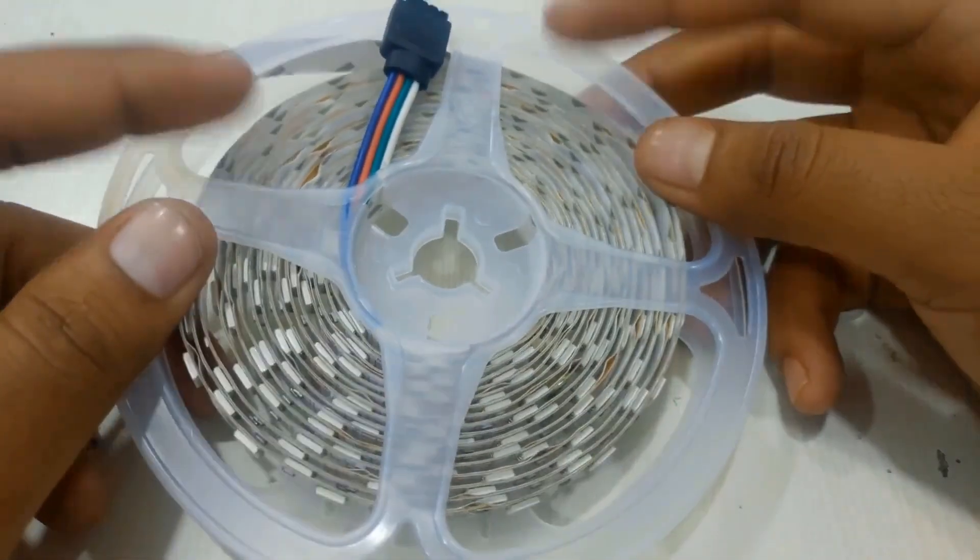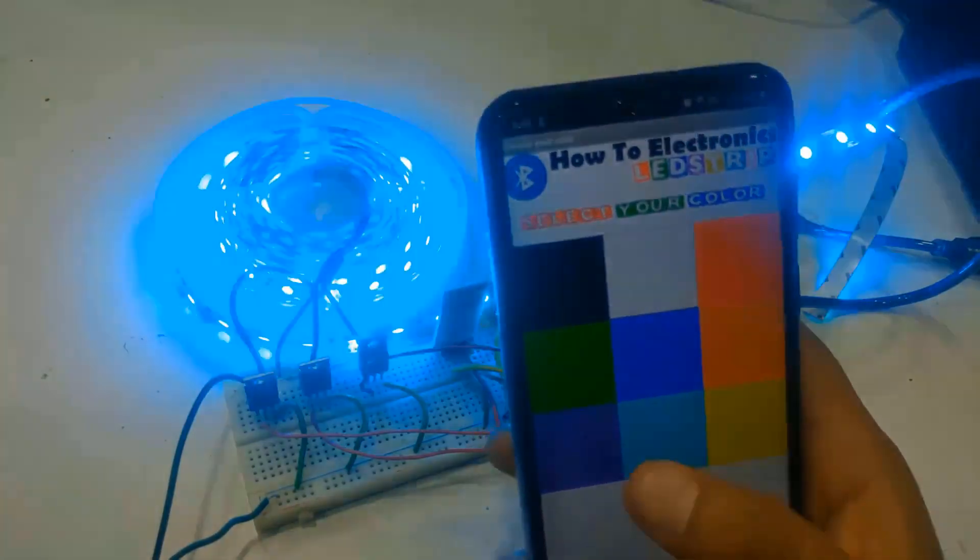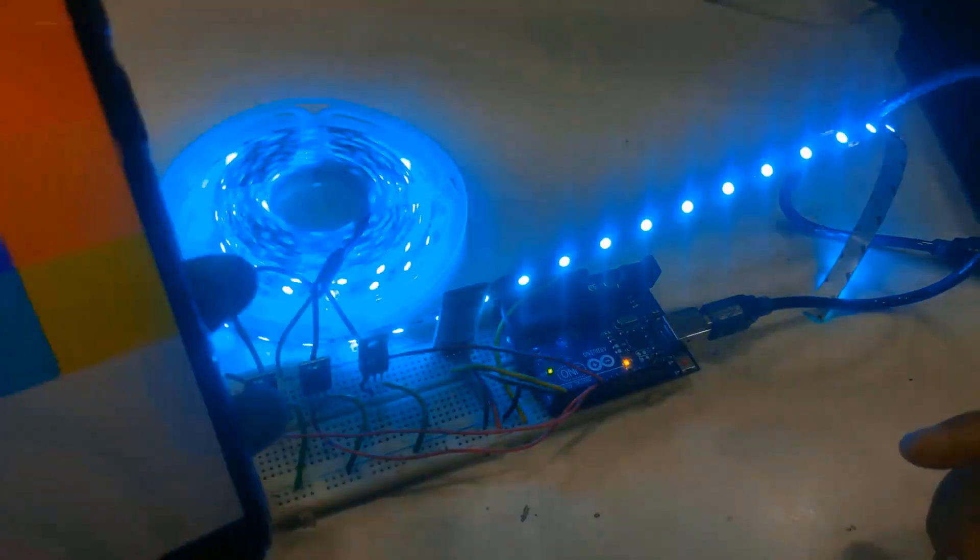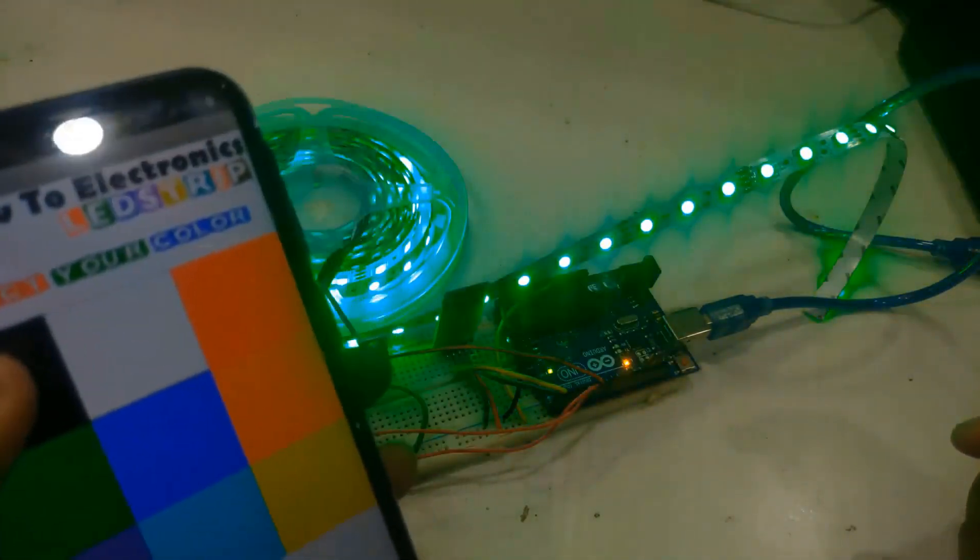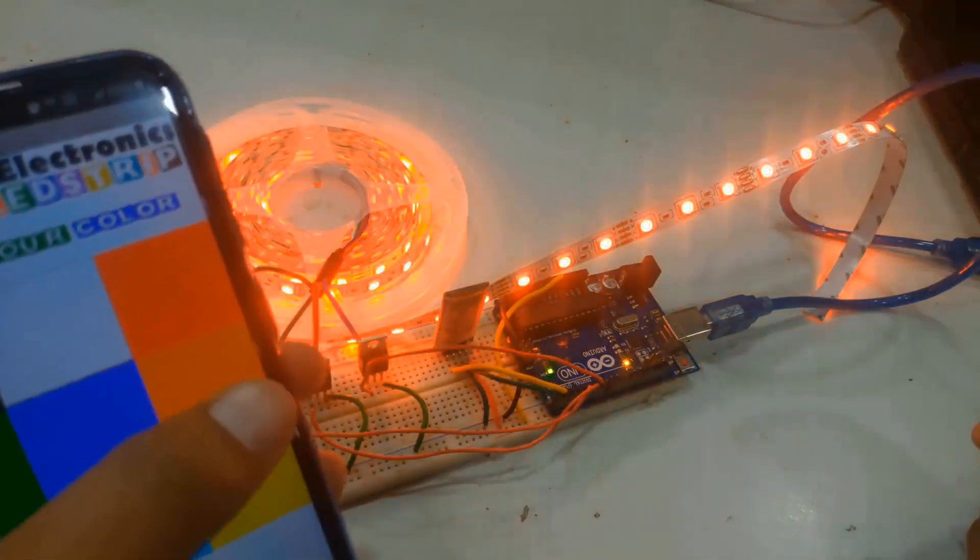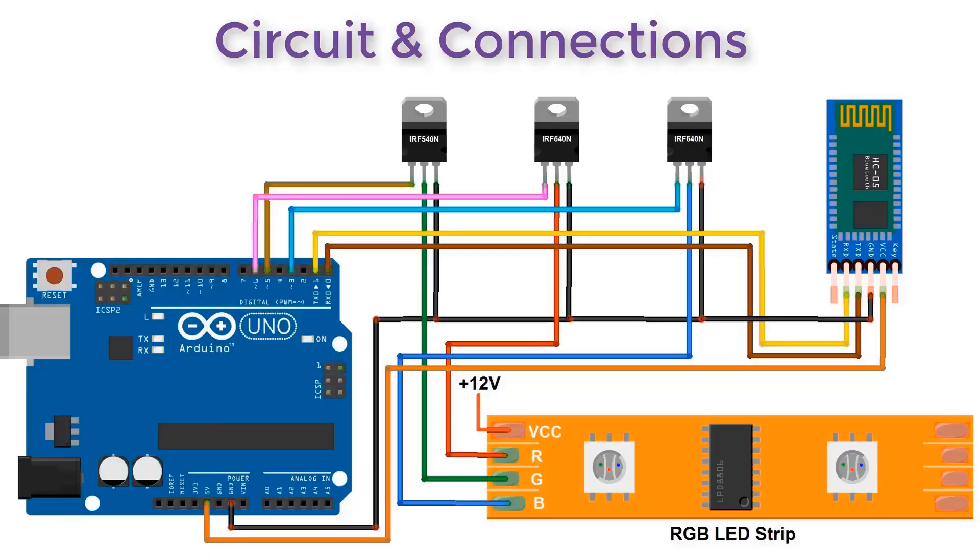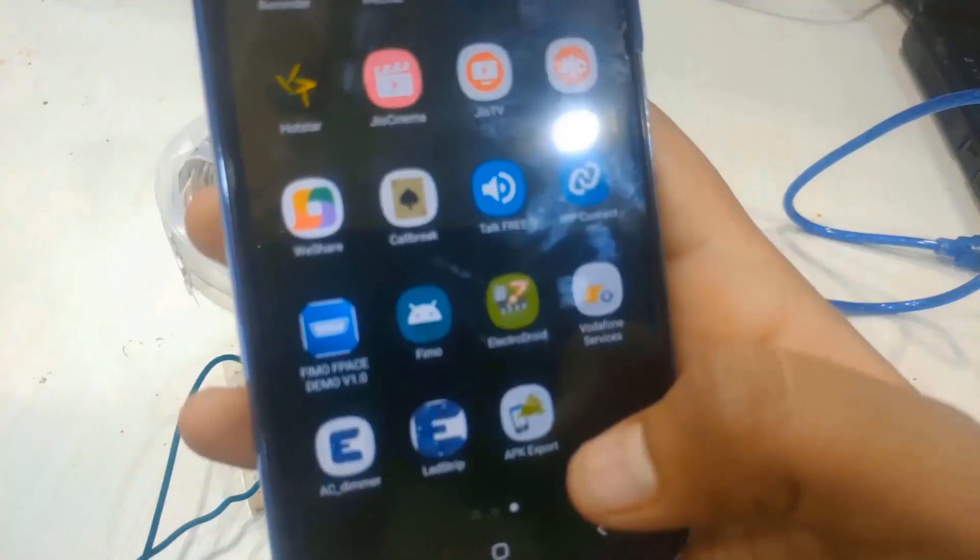Welcome to the new episode of How to Electronics. In today's video, we'll learn all about RGB LED strips. The RGB LED strip has three different colors: red, green, and blue. With the combination of these three colors, you can generate any other color you like. We'll use an Android app...